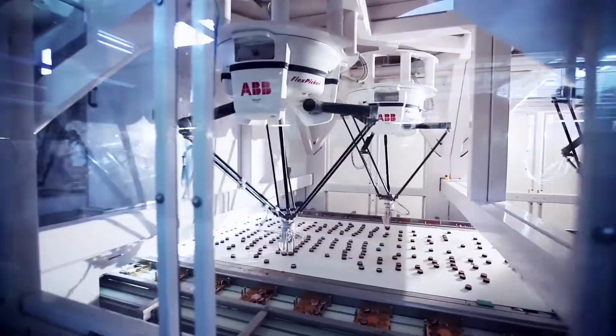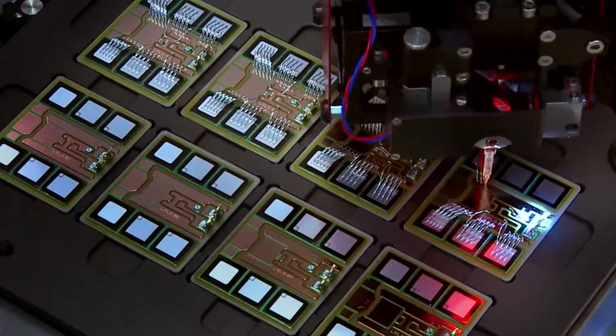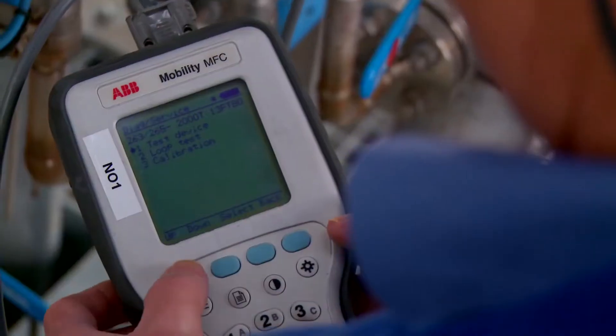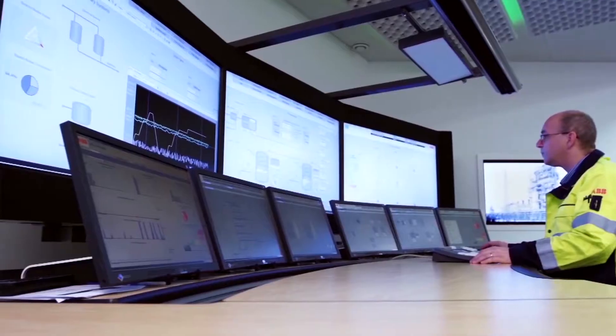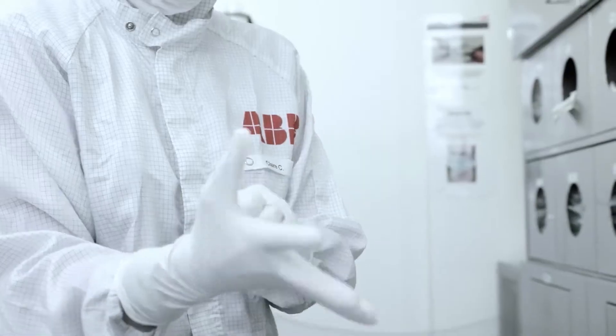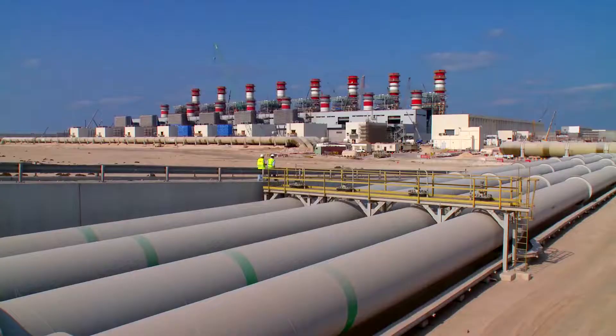Swiss tech company ABB operates in over 100 countries, servicing commercial systems from power grids to marine computing, even dancing robots. With 150,000 employees, safety is paramount but no easy task.